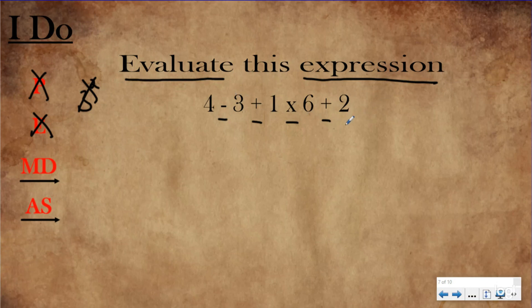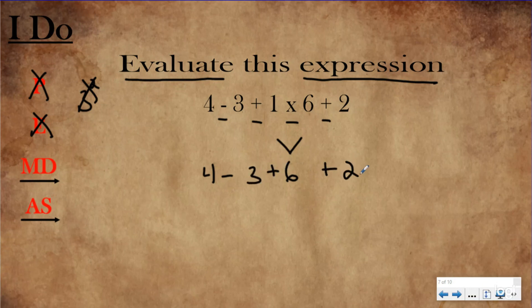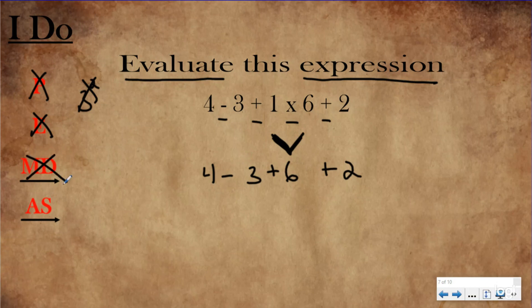I have subtraction, addition, multiplication, and addition — four operations to do. I see that multiplication and division come first, so I need to solve those first. My first step is to solve one times six, which is six. Then I rewrite the problem underneath, keeping the other operations and numbers the same. I like to show what I solved using this arrow-diamond symbol — it helps me know I solved this operation and simplified it down. Now I'm done with multiplication and division, so I cross those two steps out.